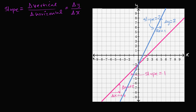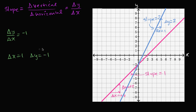What would a negative slope be? A negative slope would mean — let's take an example. If our change in y over change in x equals negative one, that means if we have a change in x of one, then our change in y would have to be equal to negative one.